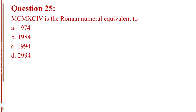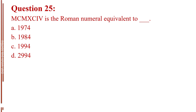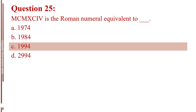Question number 25. MCMXCIV is the Roman numeral equivalent to blank. Letter A, 1974. Letter B, 1984. Letter C, 1994. Letter D, 2994. The answer is Letter C, 1994.